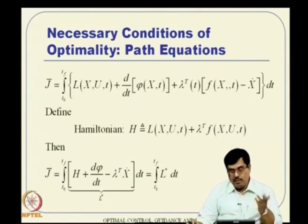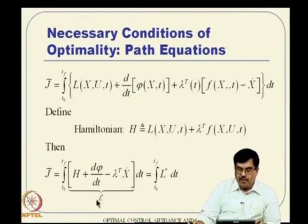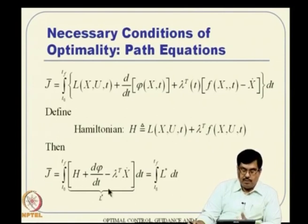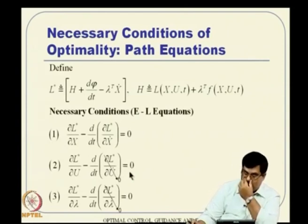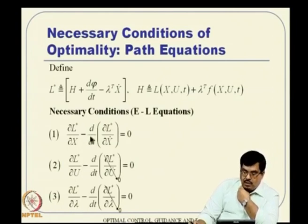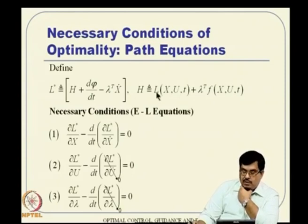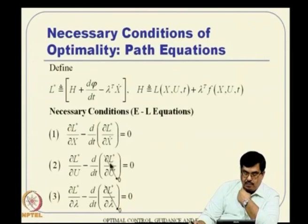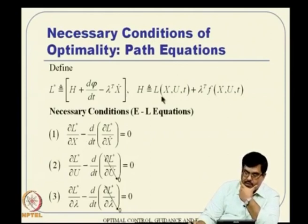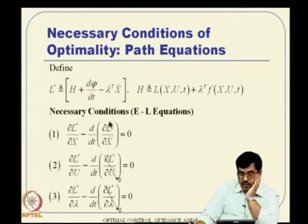Now we can apply Euler-Lagrange equations. L-star is a function of x, u, and lambda. Since L-star contains neither u-dot nor lambda-dot, those terms go to zero. We compute del L-star / del x step by step, expanding the d-phi/dt term as del-phi/del-t + (del-phi/del-x)^T * x-dot.